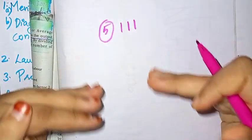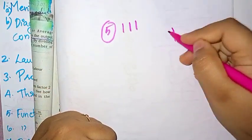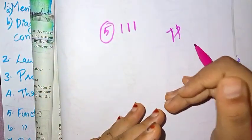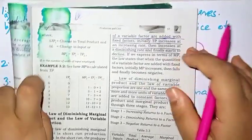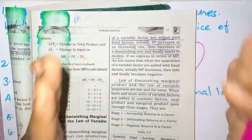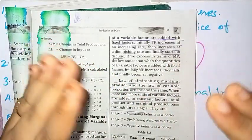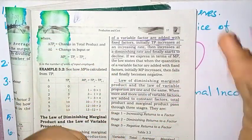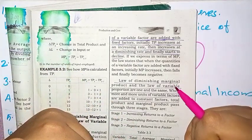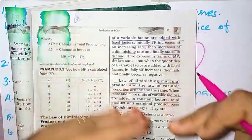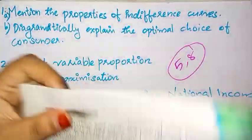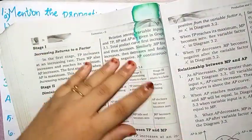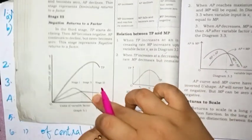What we have in this list is total product — that is the Law of Variable Proportion. When more and more units of a variable factor are added with the fixed factor, TP increases at an increasing rate, then at a diminishing rate, and then TP is declining. So we have a diagram of the Law of Variable Proportion.